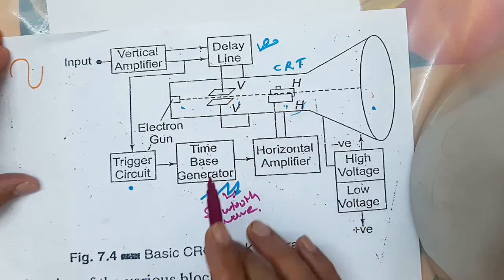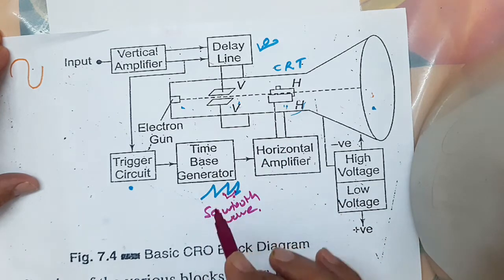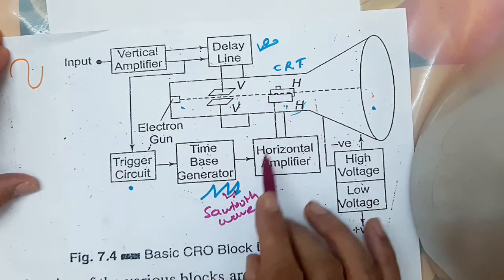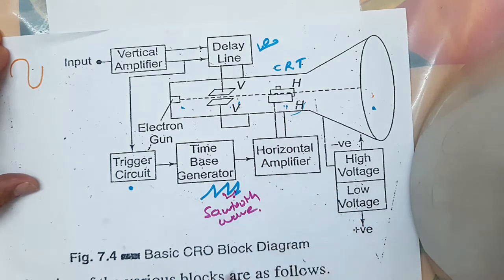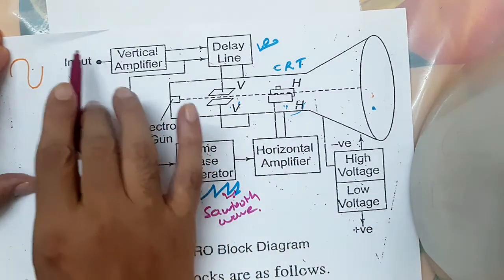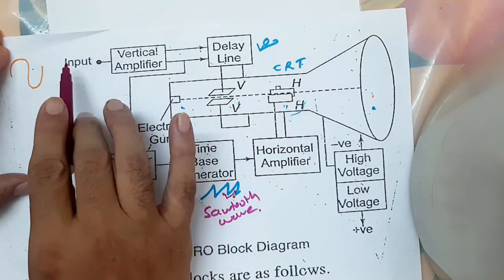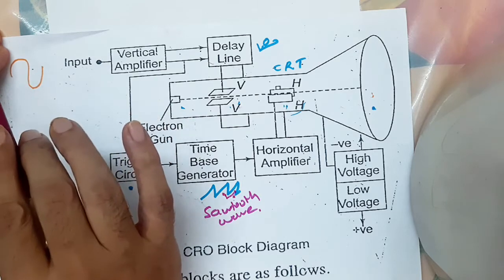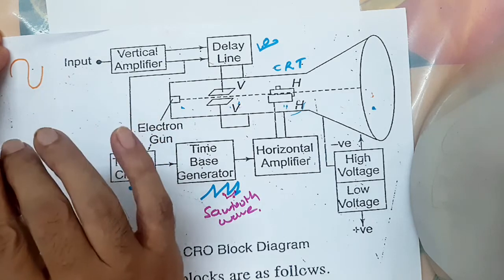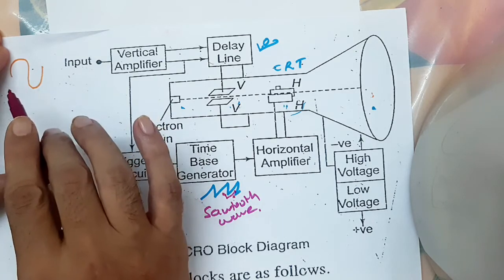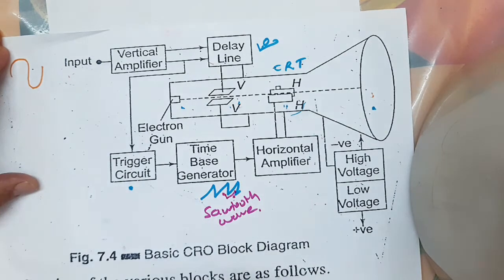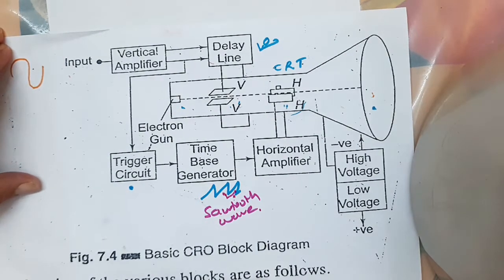Now what happens when we are applying sawtooth wave to the horizontal deflecting plates, that we will see. Also, what is the input signal — maybe it is a sine wave, maybe it is a square wave, maybe it is a triangular wave. That depends upon which type of waveform we want to see on the screen of the CRO.